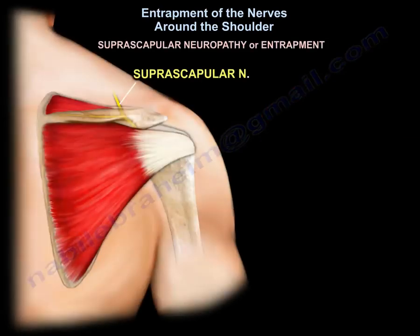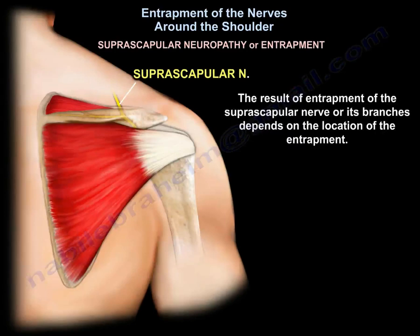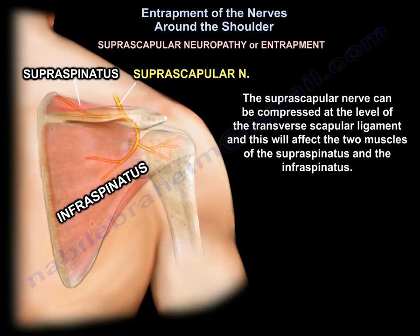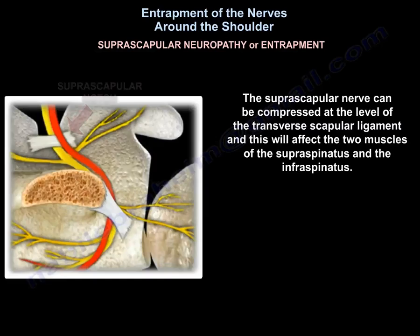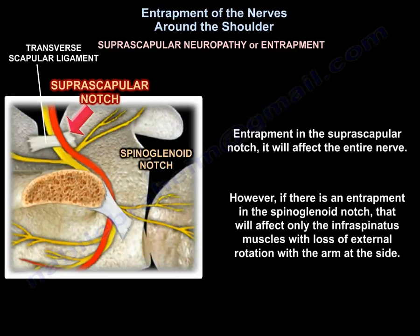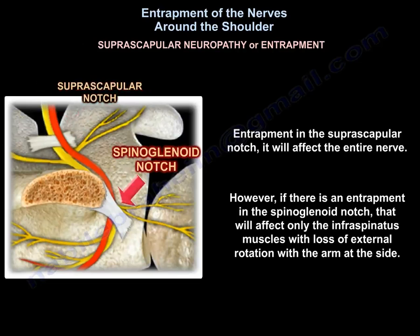Another entity is suprascapular neuropathy or suprascapular nerve entrapment. The result depends on the location of the entrapment. The suprascapular nerve can be compressed at the level of the transverse scapular ligament, affecting both the supraspinatus and infraspinatus muscles. Entrapment in the suprascapular notch affects the entire nerve. However, entrapment at the spinoglenoid notch affects only the infraspinatus muscle, causing loss of external rotation with the arm at the side.